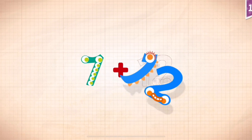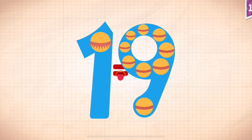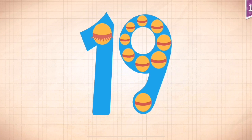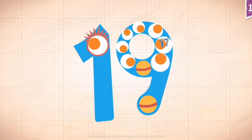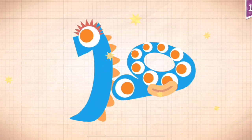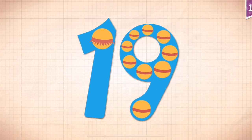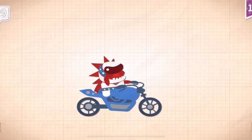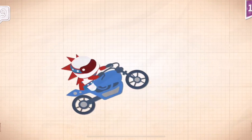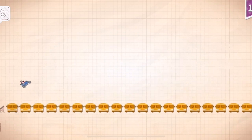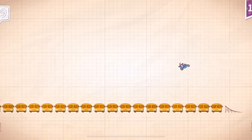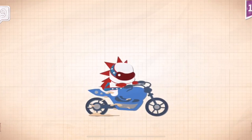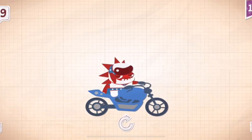7 plus 12 equals 19. 10, 11, 12, 13, 14, 15, 16, 17, 18, 19! Rocky jumped over 19 school buses on his motor-